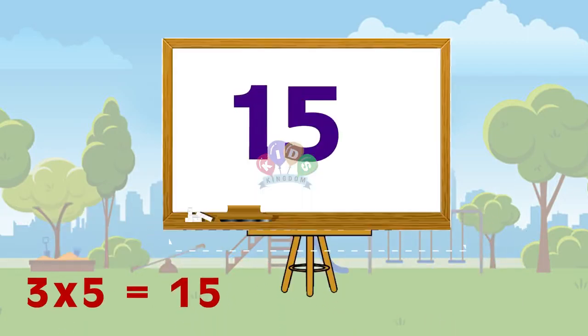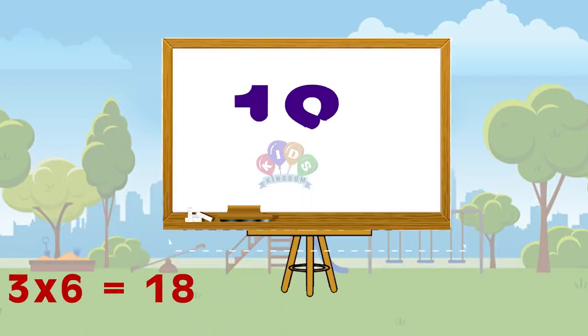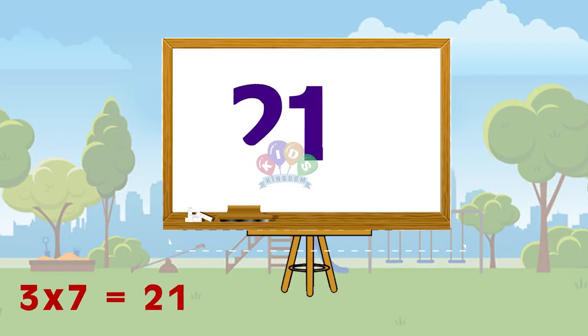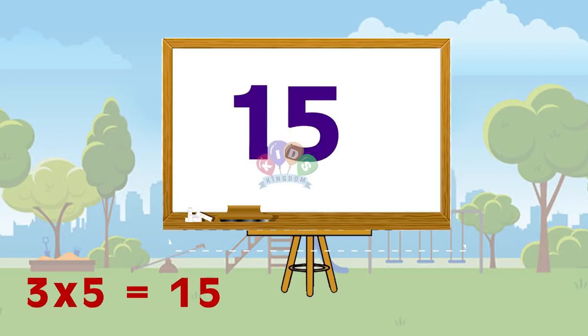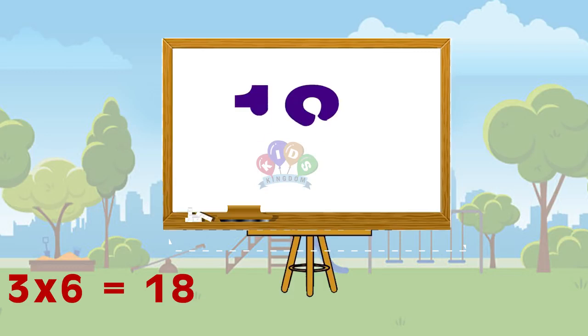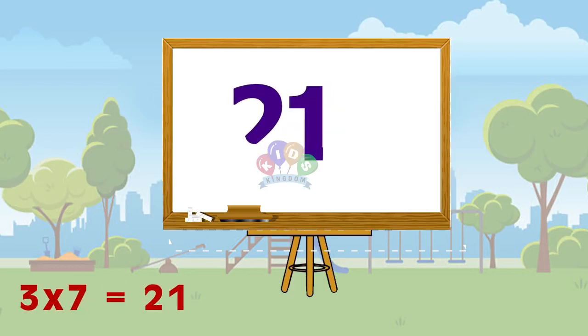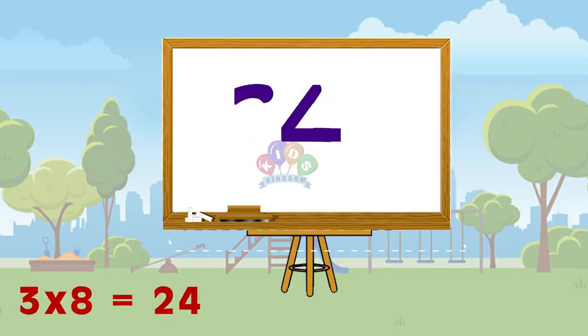Three 5s are 15, 3 6s are 18, 3 7s are 21, 3 8s are 24. Three 5s are 15, 3 6s are 18, 3 7s are 21, 3 8s are 24.